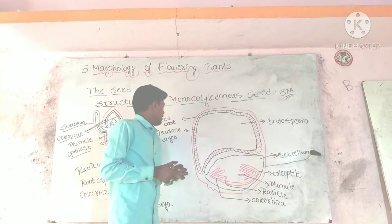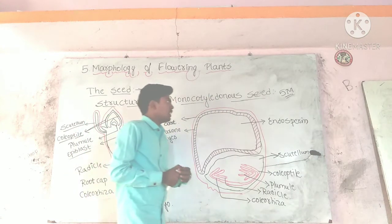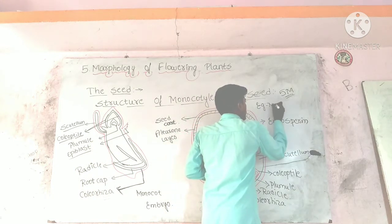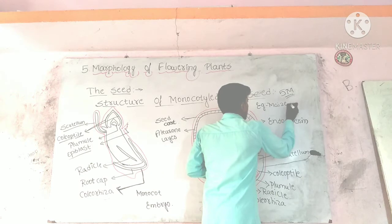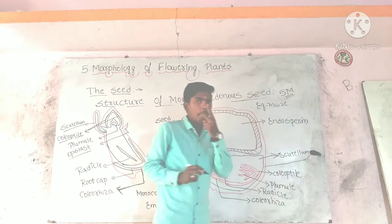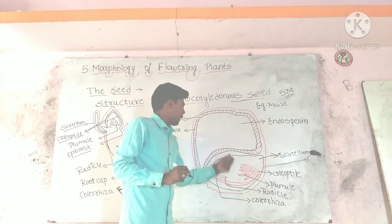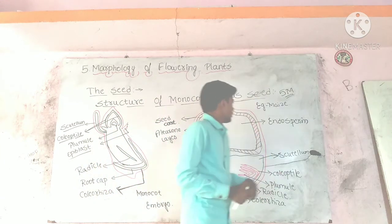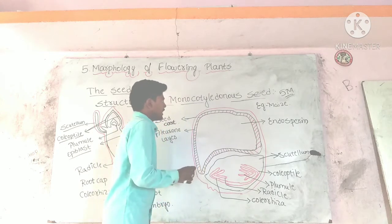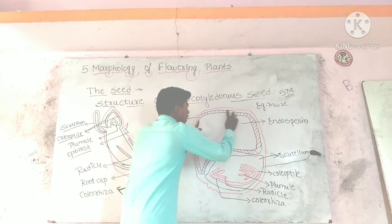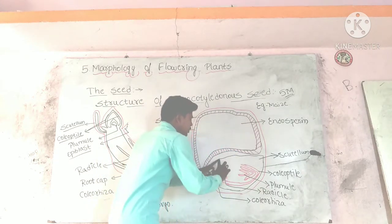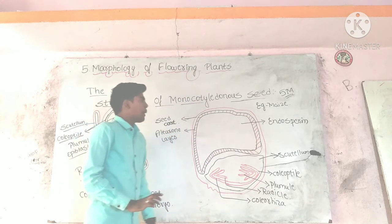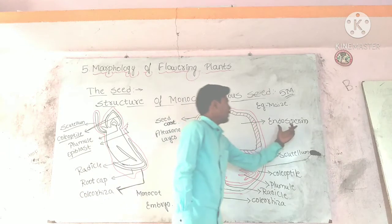The monocot seed consists of two compartments: one is the larger compartment and one is the smaller compartment. The larger compartment consists of endosperm.